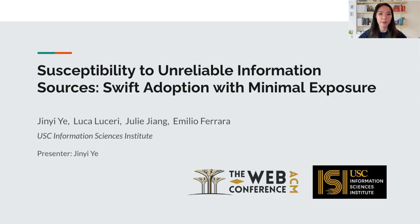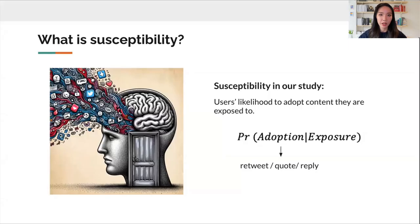So what exactly is susceptibility in the digital world? Imagine your mind as a doorway to your beliefs, and susceptibility is how wide open is that door to the endless stream of information online. In our study, susceptibility is a measure of how likely we are to adopt and interact with an information source that we come across on social media. It is framed as a probability, focusing on the dynamics between exposure to information and the likelihood of its adoption.